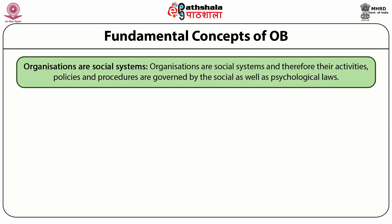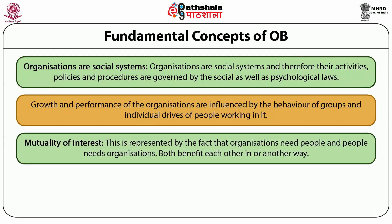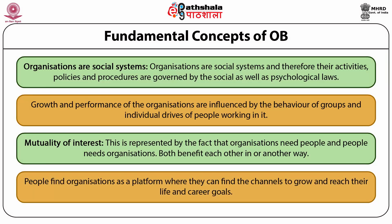This philosophy rejects the old view of considering human resources as an economic tool. Organizations are social systems, and their activities, policies and procedures are governed by social as well as psychological laws. Like individuals, organizations also have social norms and status. Two types of social systems run in parallel in every organization: formal and informal. Mutuality of interest: organizations need people and people need organizations — both benefit each other. People find organizations as a platform to grow and reach life and career goals, while organizations need people to achieve organizational goals.